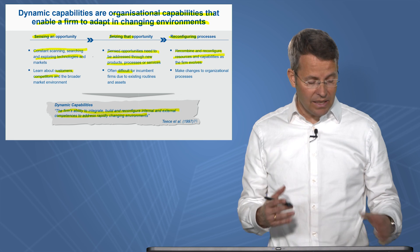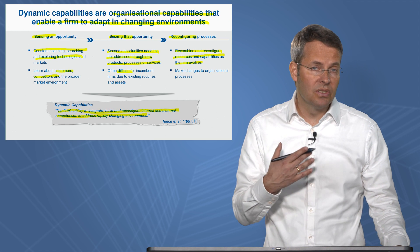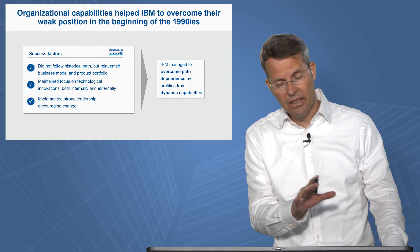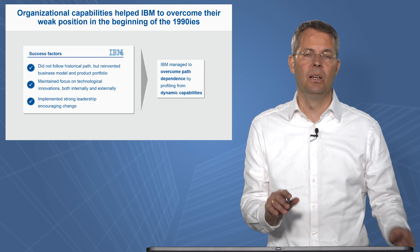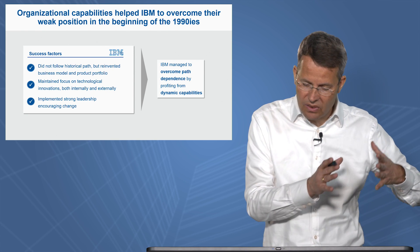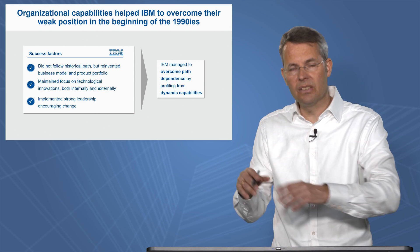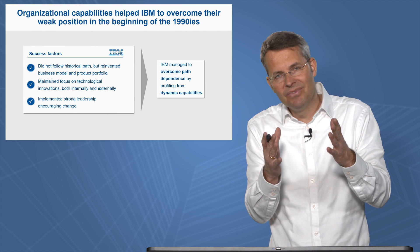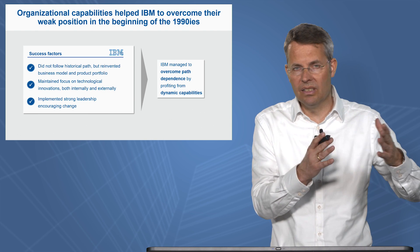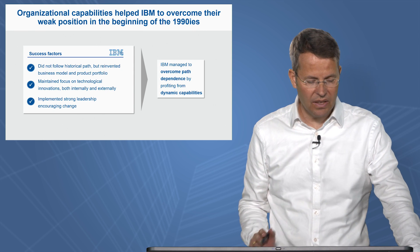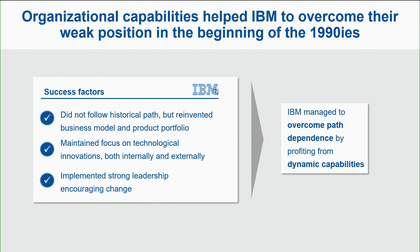There are some examples of companies out there who were successful in doing that. We've talked about IBM quite often, and IBM is still a good example. What makes IBM successful nowadays again? We were looking at the 80s — very successful. The 90s — not really successful. Nowadays, IBM Watson and so on — a successful company. What were the success factors? They didn't follow the historical path, but they reinvented the business model and the product portfolio.